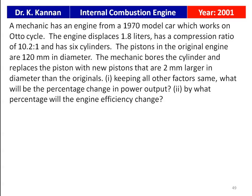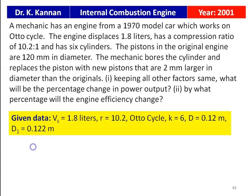Keeping all other factors the same, what will be the percentage change in power output? And by what percentage will the engine efficiency change? Given data: swept volume is 1.8 liters, compression ratio is 10.2, it is an Otto cycle petrol engine, number of cylinders k equals 6, original diameter equals 0.12 meters, and the revised diameter after boring is 0.122 meters — 2 millimeters larger.